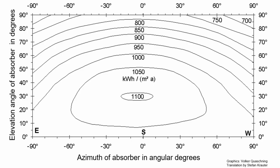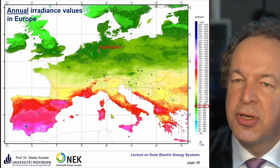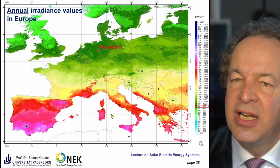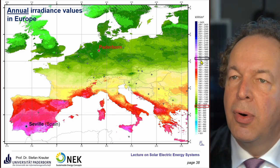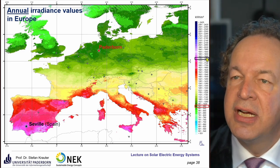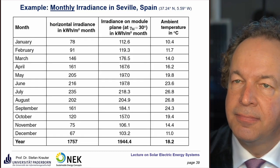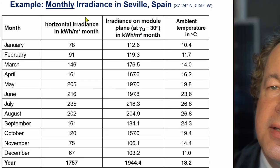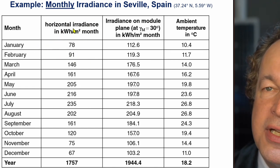At a very good location in Europe — for example, Seville in southern Spain — we reach about double that value: 1700 to 1800 kilowatt-hours per square meter per year. Looking at Seville's monthly irradiance, a horizontal mounted system receives about 78 kilowatt-hours per square meter per month.